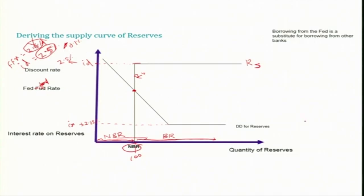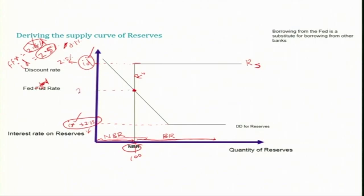So two things we infer here: the lower limit of the Fed Fund rate is 2.25 percent — it will never become 2.24 or lower — and the upper limit is the discount rate, it will never go above 2.5 percent. When the Fed announces the lower limit and upper limit, they are also changing the interest rate on reserves and the discount rate. Only then can they make member banks fall within this boundary, so the effective Fed Fund rate will be somewhere between the lower limit and upper limit — for example, 2.4 percent in this case.